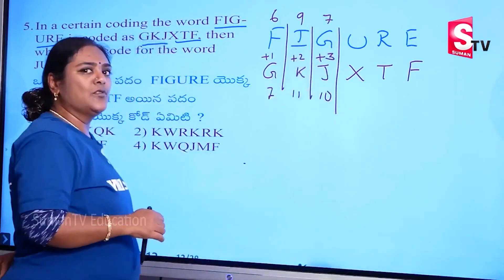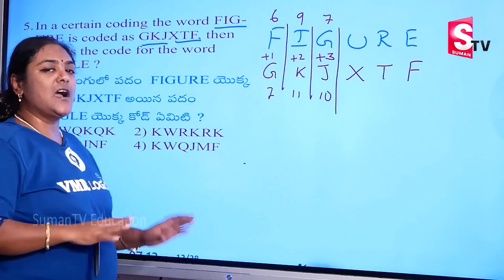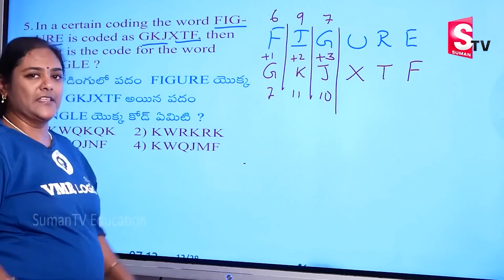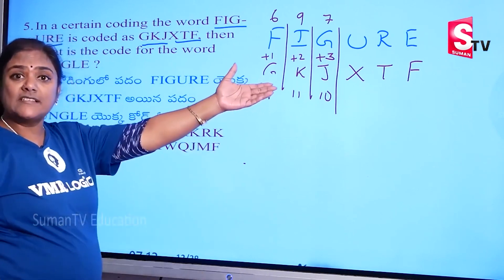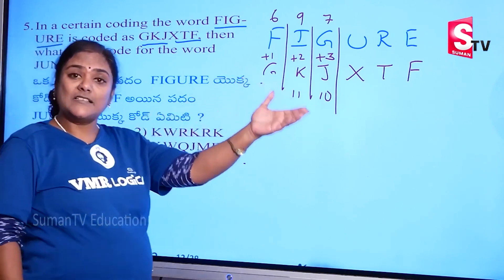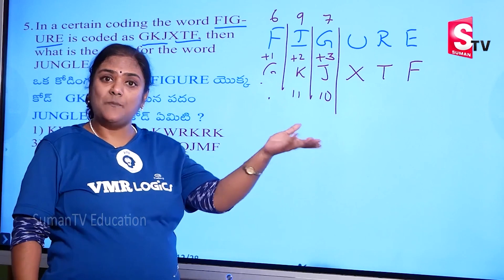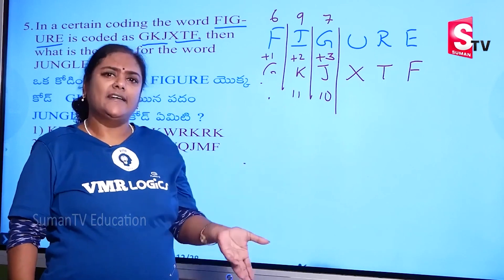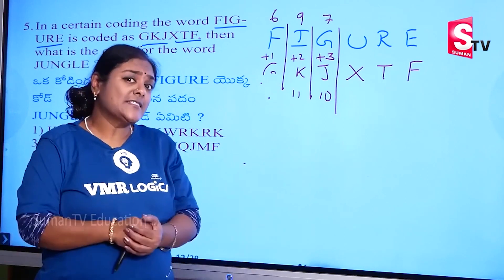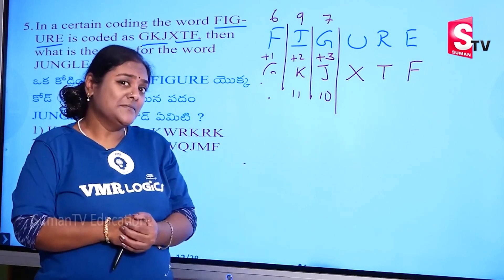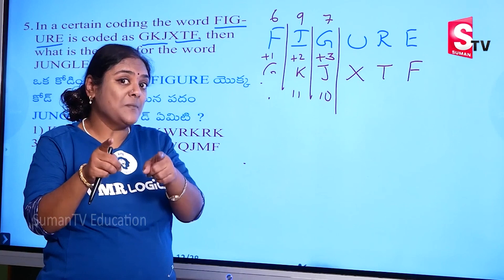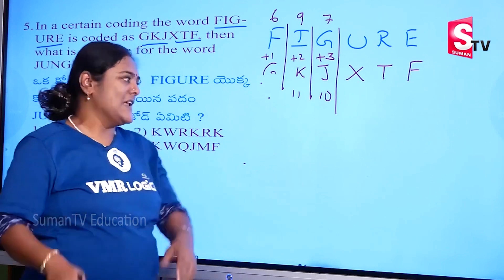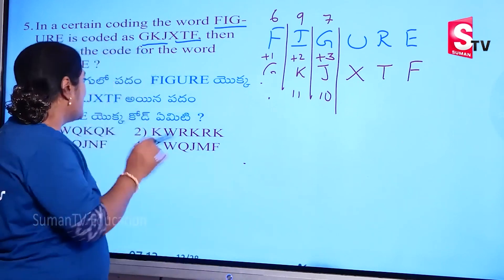Now, the pattern continues: 3 letters, plus 1, plus 2, plus 3. This is automatic. And next: plus 4, plus 5, plus 6.